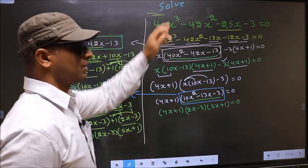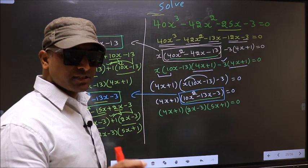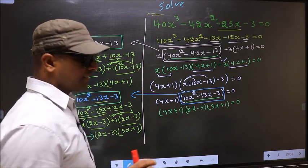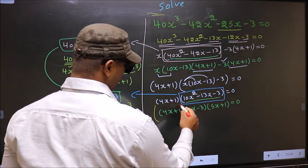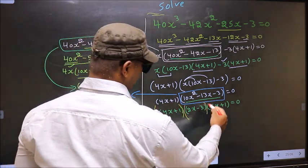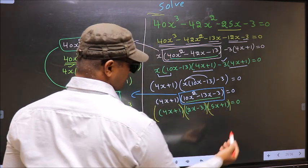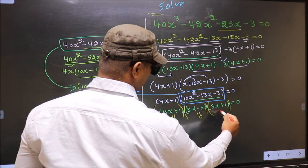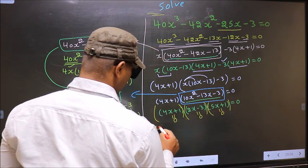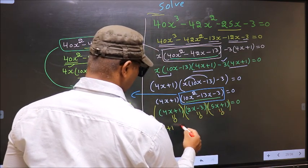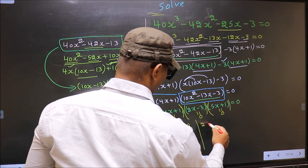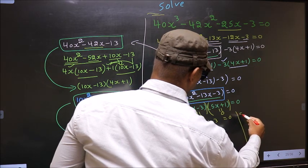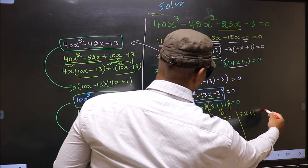They told us to solve, which means we should find the values of x. And over here we got a product of brackets equal to 0. So to get x values, we should equate each bracket to 0. That is 4x plus 1 equal to 0, 2x minus 3 equal to 0, 5x plus 1 equal to 0.